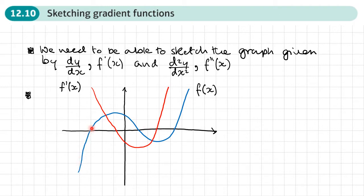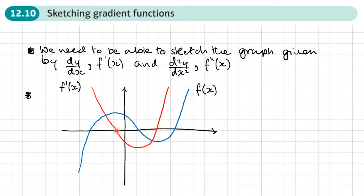When the graph is increasing, it has a positive gradient, so the red derivative graph is above the axis — it's positive. You could think of the y-axis here as being dy/dx rather than y. Where the derivative graph is below the axis, dy/dx is negative, which means the original graph is decreasing. So: increasing graph means above the axis, decreasing graph means below the axis, and zero gradient means on the axis.